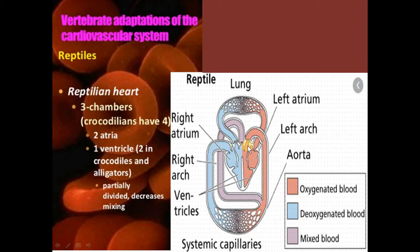It prevents the deoxygenated blood from mixing. On the left side, oxygenated blood is present and on the right side, deoxygenated blood is present. When ventricles contract in the reptile's heart, because of the contraction, the blood moves through the aorta to different body regions — it becomes a blood supply.